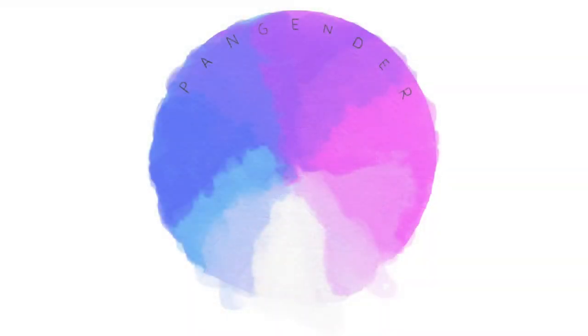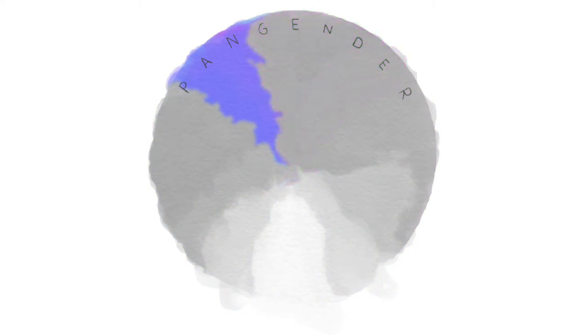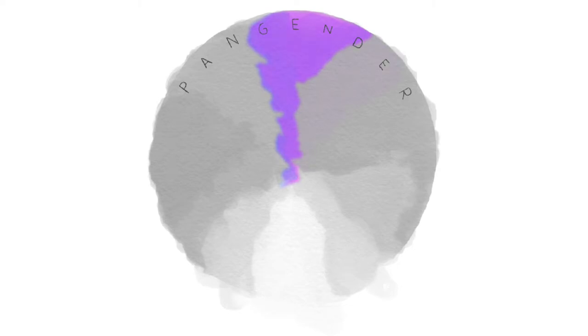On the top portion of this map, you have three different shades of purple, which aim to show people who identify between male and female. It's a gradient: the more blue-purple section is for people who identify more with male and masculinity but still have a mixture of male and female. The middle portion is for people who equally identify with both. The more pink section is for people who identify more with female traits but are still a mixture — not fully male or female, just leaning toward one side.